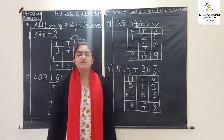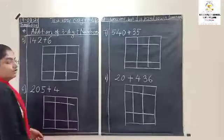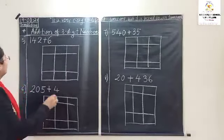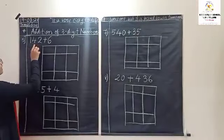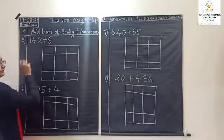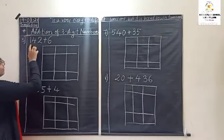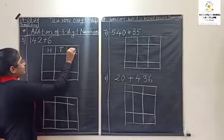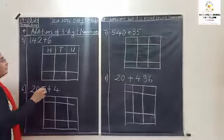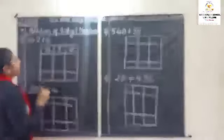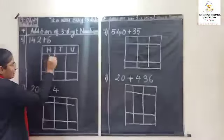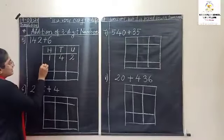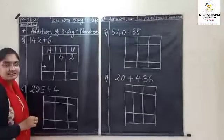Now we will continue with another question: one hundred and forty-two plus six. How many digit number is there? One, two, three. So hundreds, tens and units place. First, arrange this number in the table. Six is a single digit number.